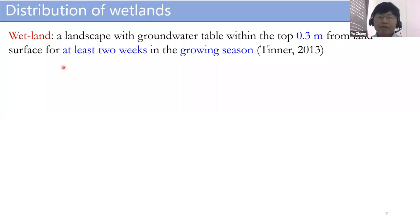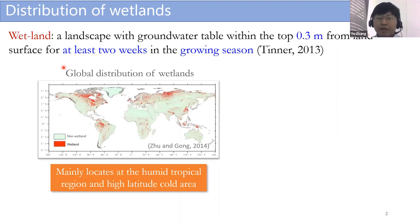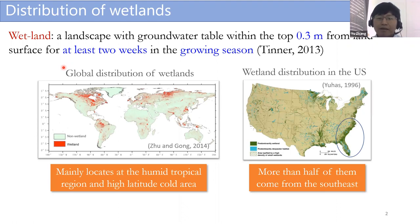The first question you may have is: what are wetlands? Wetland is a landscape with groundwater table within 0.3 meters from the land surface for at least two weeks in its green season. From the global distribution, wetlands are mainly located at high latitude cold areas and also the humid tropical region. If we zoom into the US, the wetlands also follow this distribution pattern.